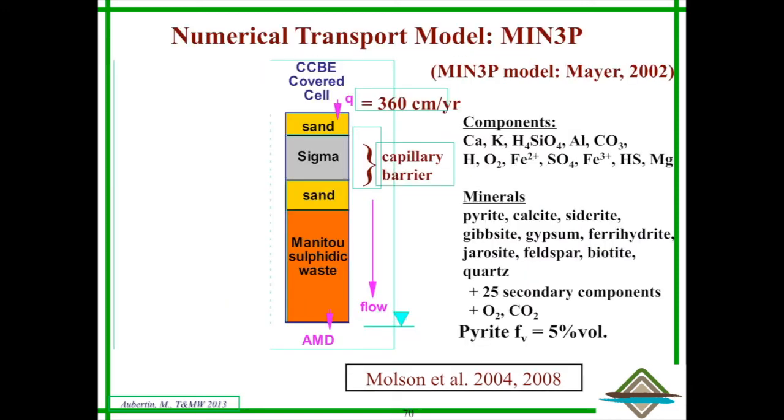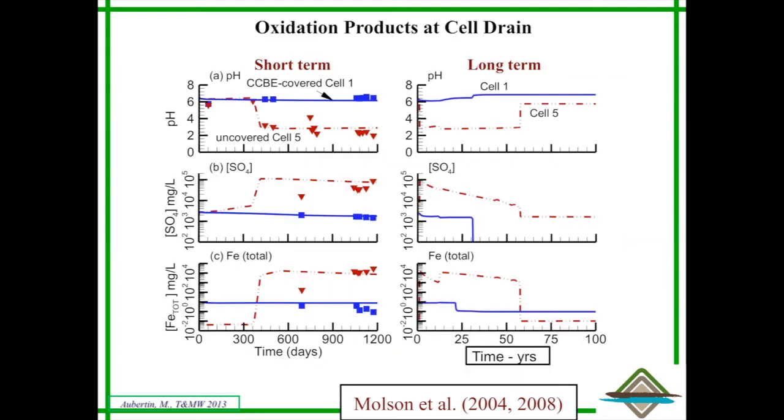This allowed us, for instance, to compare what was happening when you had covers on top, no change in pH, when you didn't have the cover and the reduction of pH, increase in sulfate, increase in iron production, and so on. Using these data, we can make predictions for the long term.